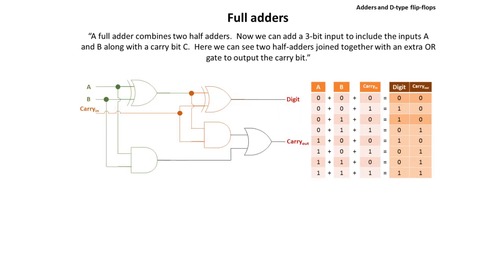A full adder combines two half adders together. You can see them represented below — here's the first one in green and here's the second one in orange. Now we can add a 3-bit input which includes inputs A and B along with a carry bit C. They have to be joined together with an extra OR gate in order to output the carry bit as shown here.